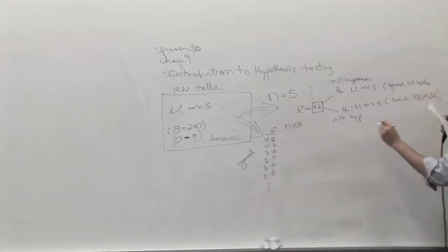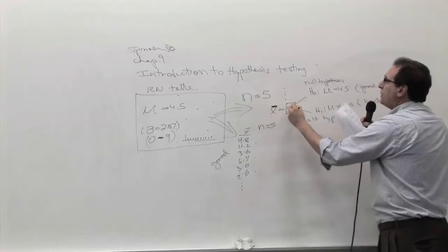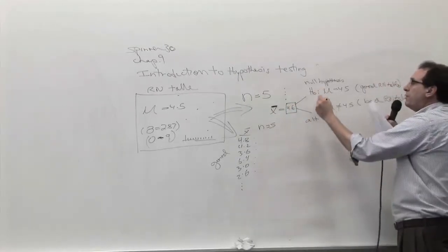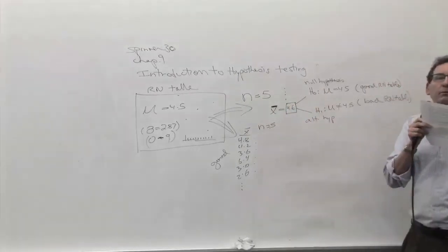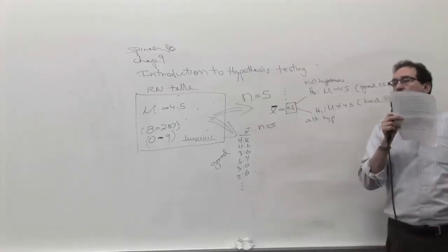So how would you interpret, this is your data, this is your evidence. How would you interpret the 4.6 as backing up the H0 or backing up the H1? That's the question I posed a minute ago. Now we can phrase it a little more precisely.